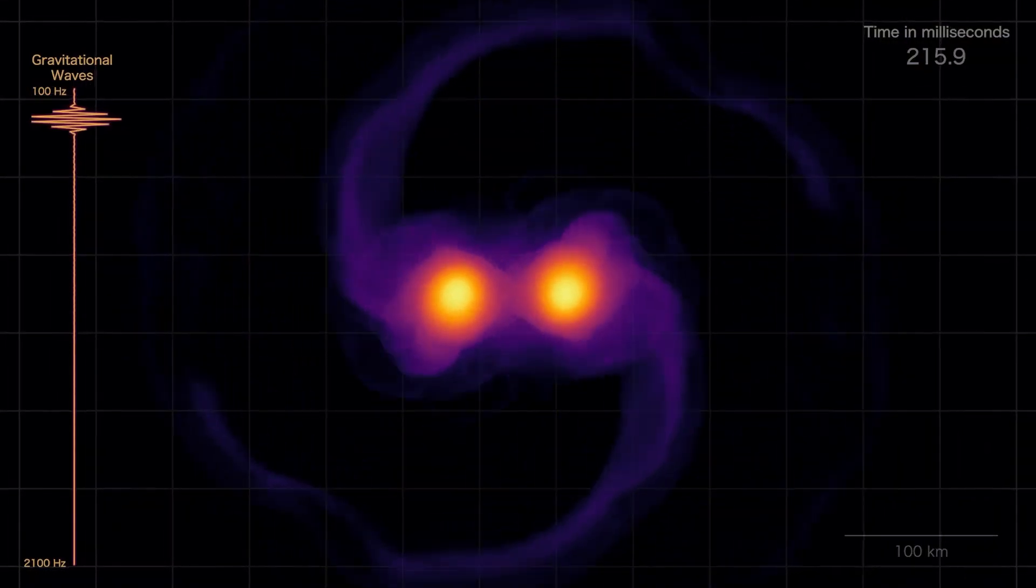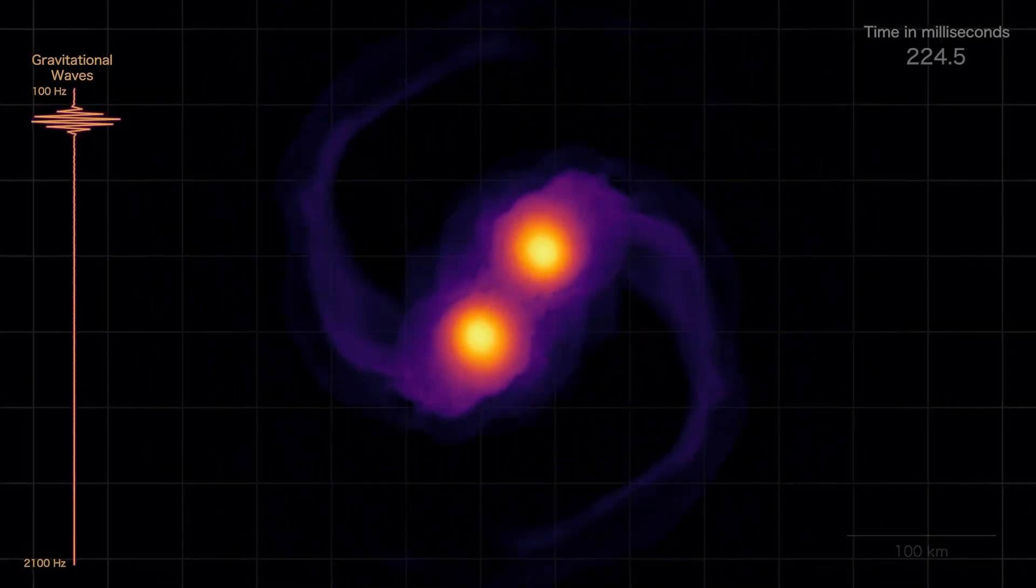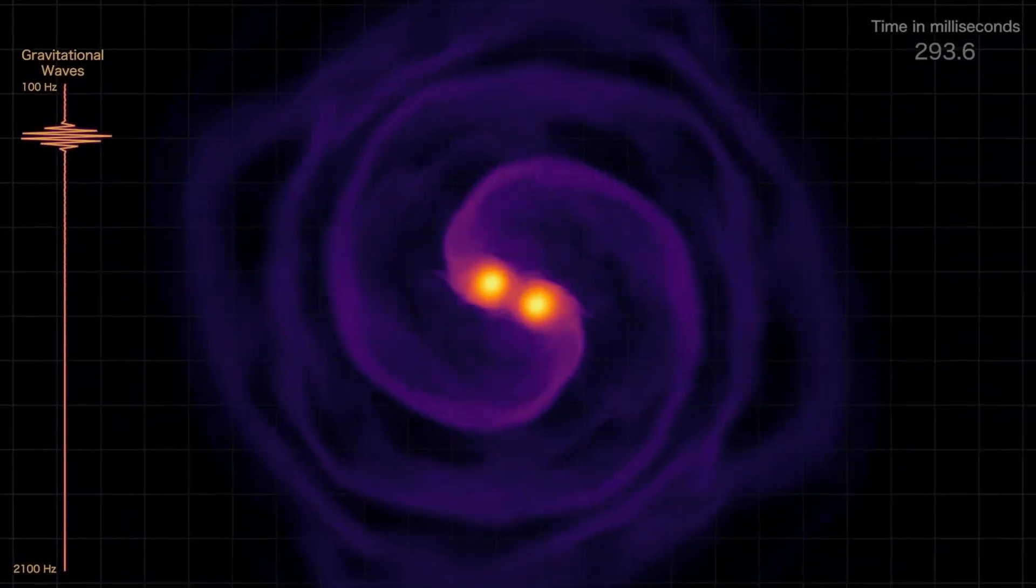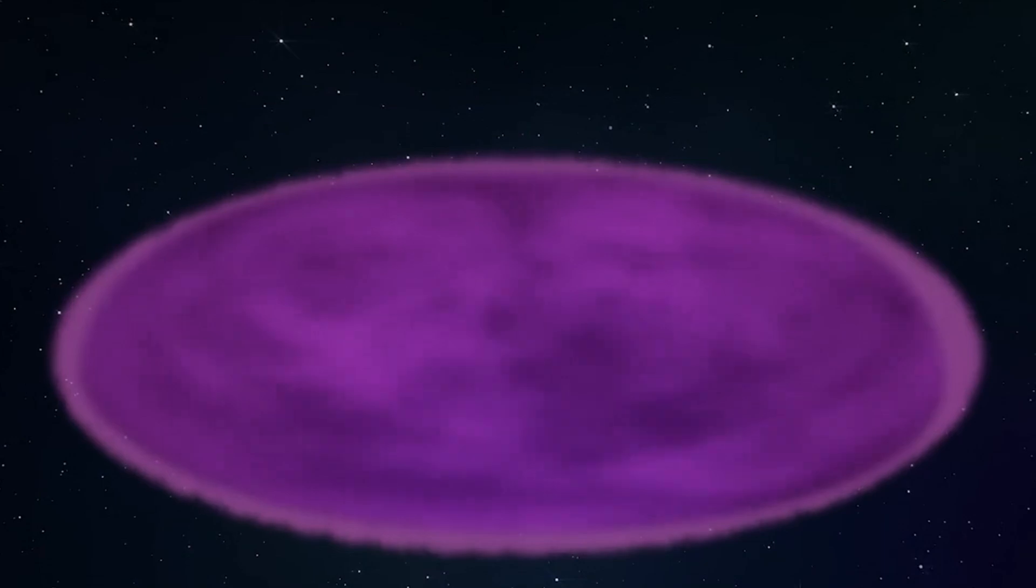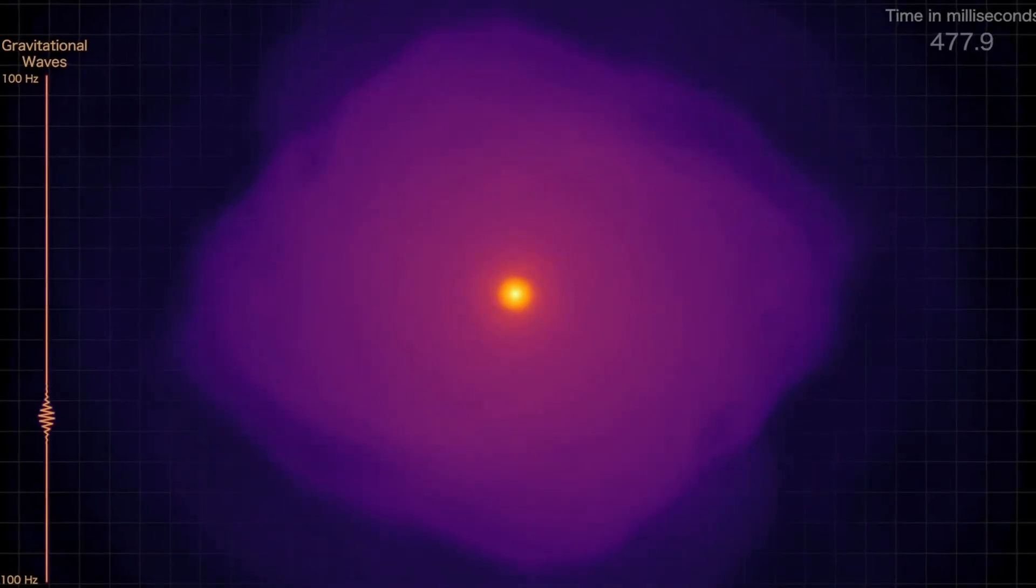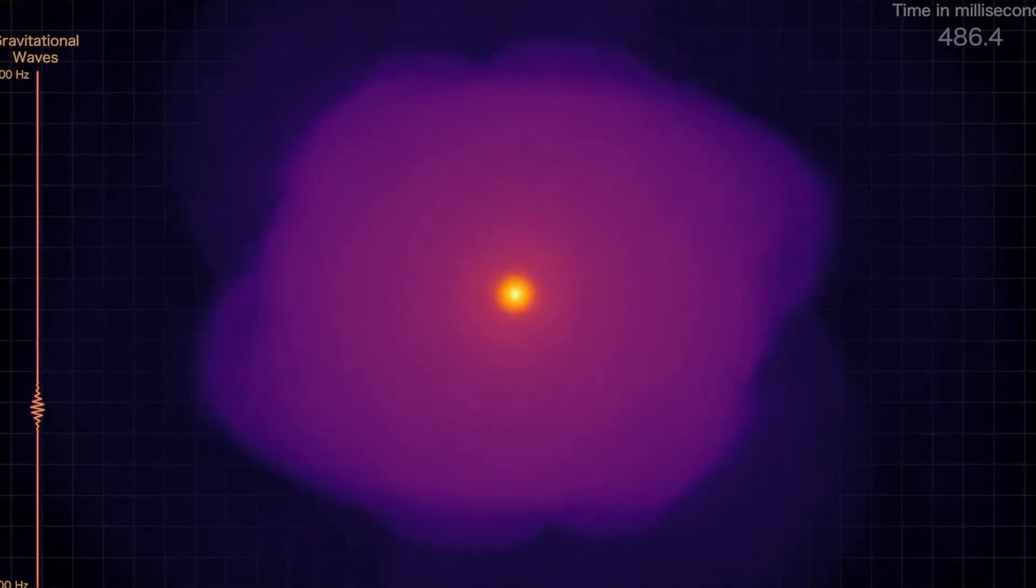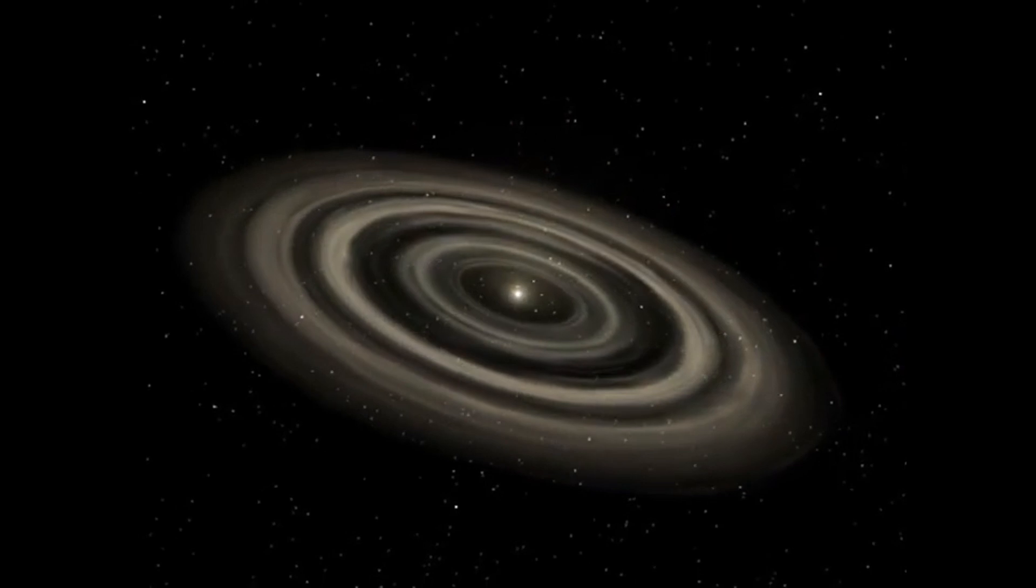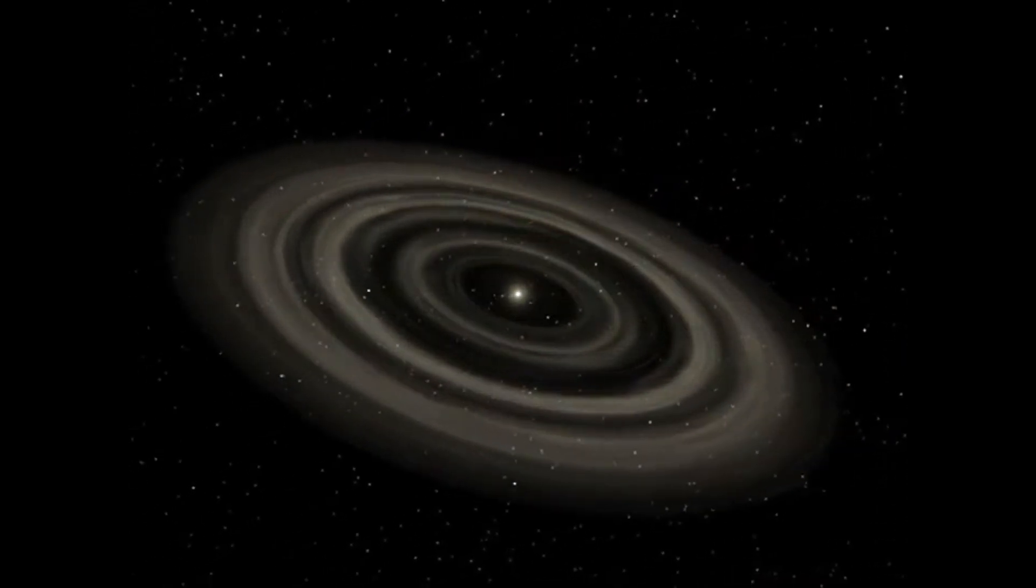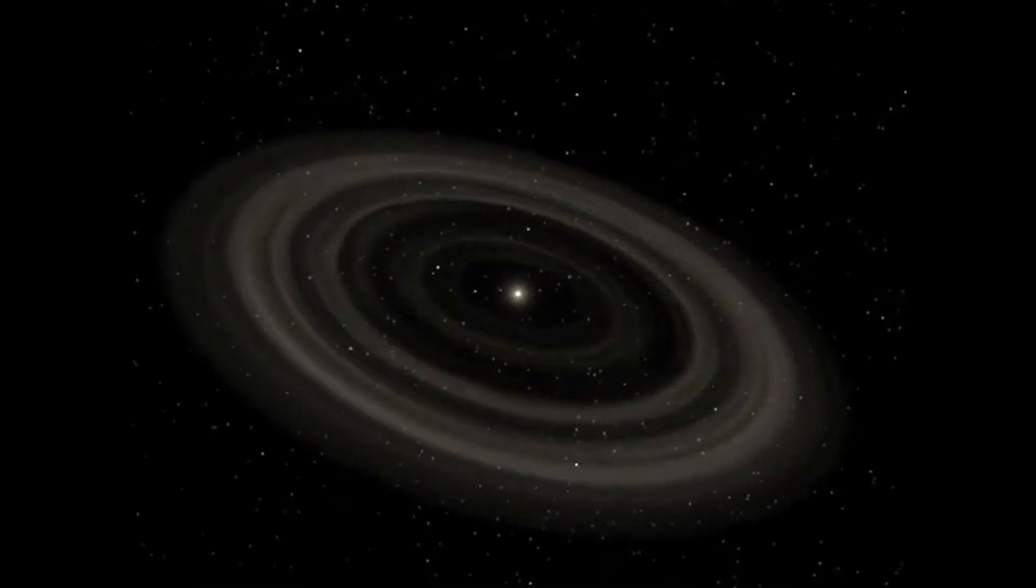As the gas cloud contracts, its rotation speed increases, leading to the formation of a spinning disk. This disk is where planets form and align, guided by the conservation of angular momentum. Over millions of years, these processes lead to the creation of a stable flat plane, where planets orbit.